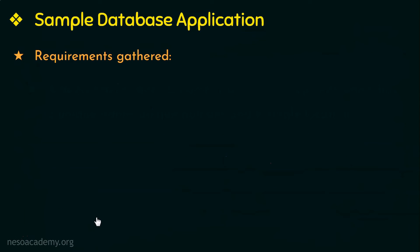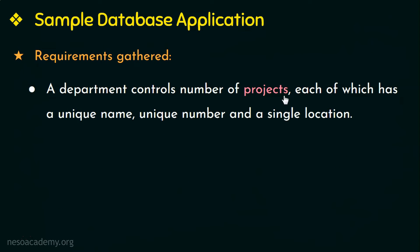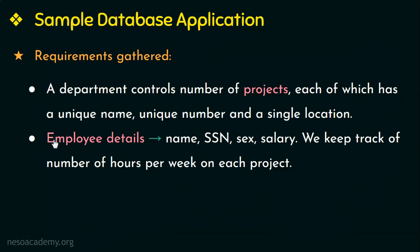A department controls a number of projects, each of which has a unique name, unique number, and a single location. We store employee details like the employee name, social security number which is unique for each employee, sex or gender, and salary details. We also keep track of the number of hours per week an employee works on each project.